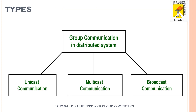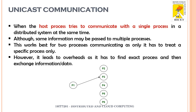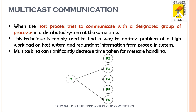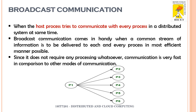Let's look at the types of group communication used in distributed systems. The first is unicast communication — one-to-one communication. The second is multicast communication — one to many, that is a designated group, not all processes. The third is broadcast communication, where messages are sent to every node in the network, similar to radio telecommunication. Broadcast communication requires less processing power, so it is very fast compared to other methods.